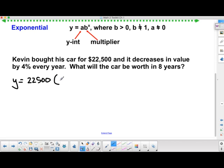Our multiplier in this case is going to be 0.96, and then it's going to be raised to the power of x. X would be the number of years, and y would be the amount of money it will be worth in however many years we're talking about.